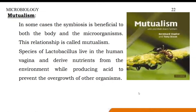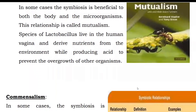For example, species of Lactobacillus live in the human vagina. These microorganisms, called Lactobacillus bacteria, drive nutrients from the environment while producing acid to prevent the overgrowth of other organisms. The advantage is that the overgrowth of other harmful organisms is prevented. This is an example of mutualism — the Lactobacillus in the human vagina benefits both itself and the host.